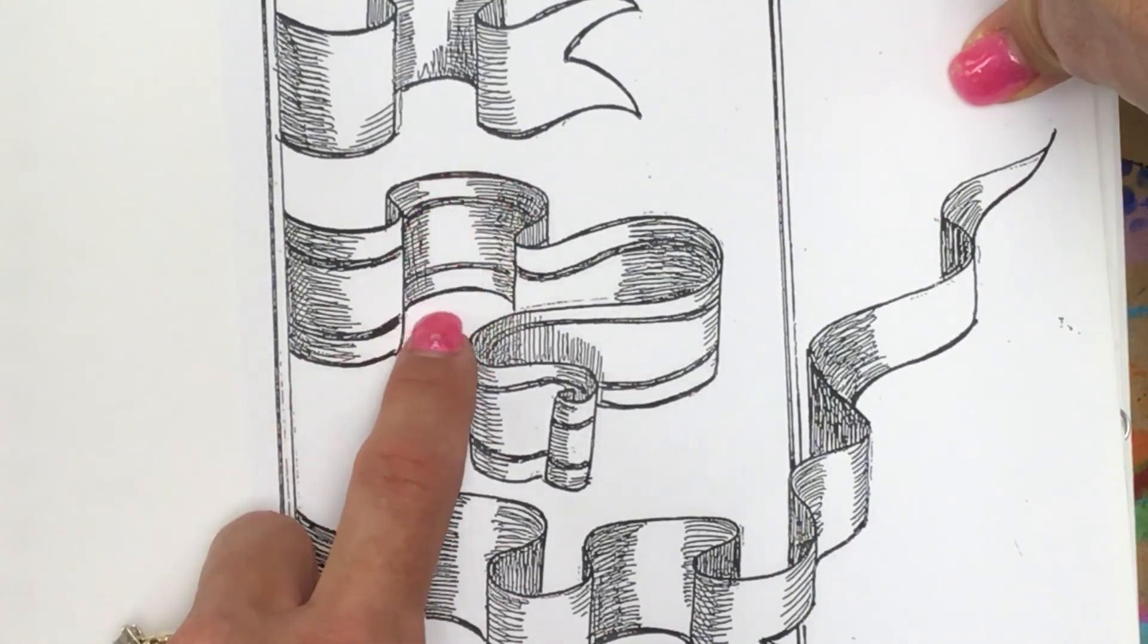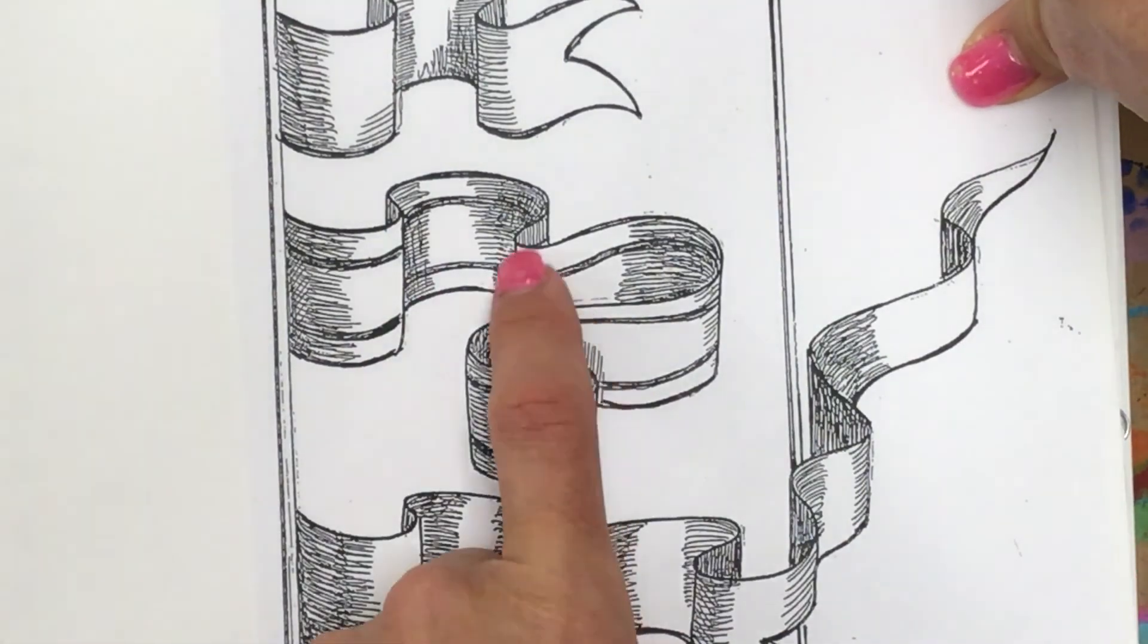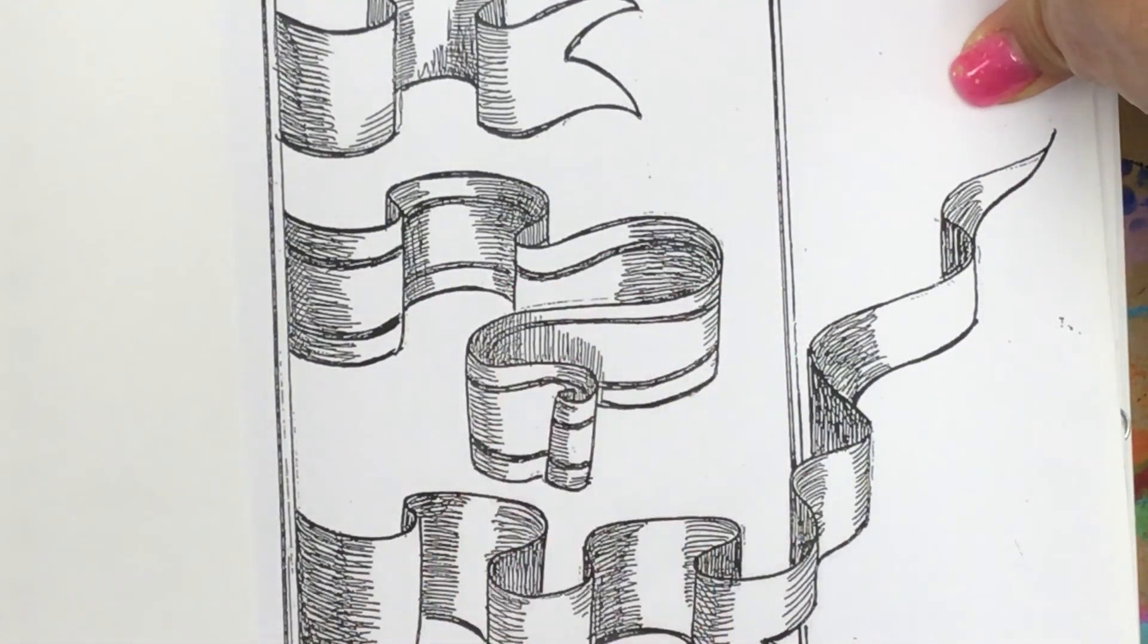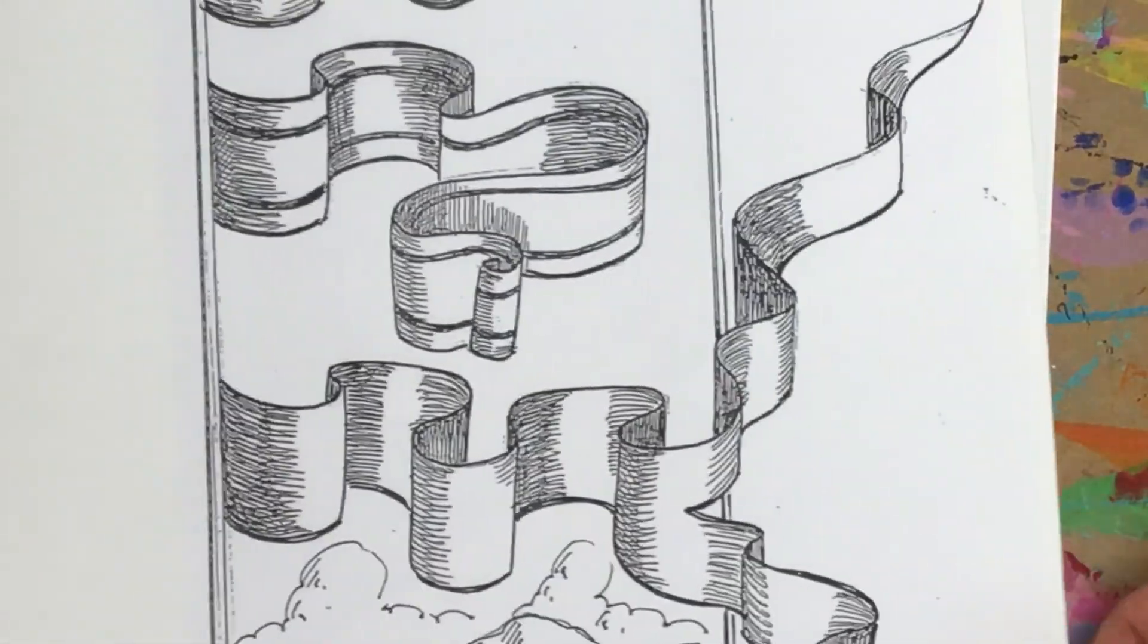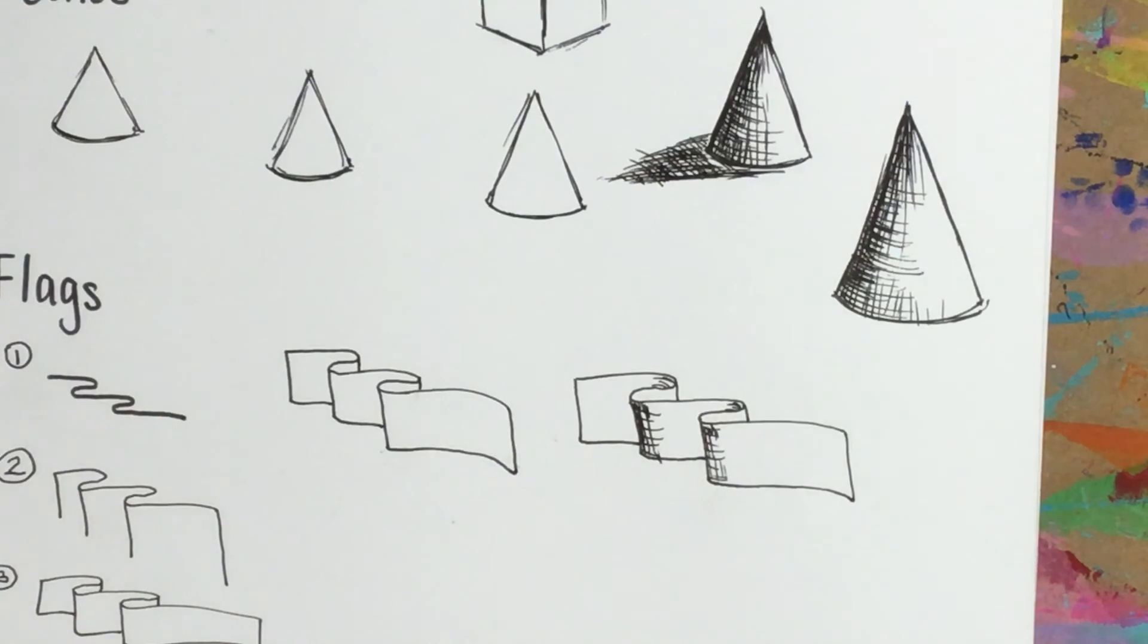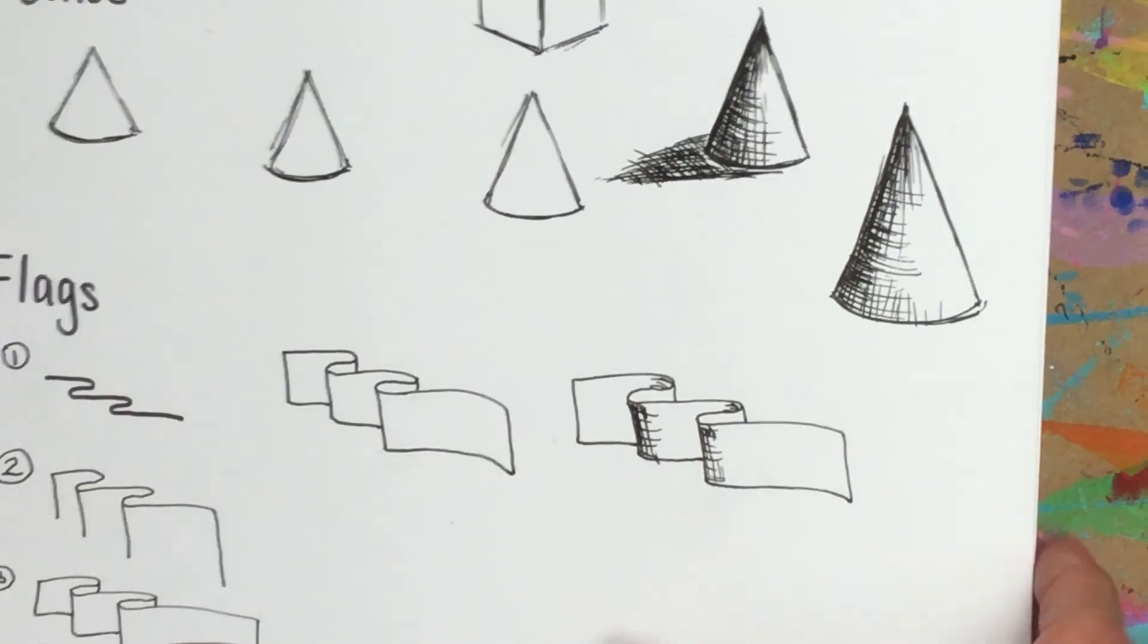So this one curved that way, this one curves that way as well. Then paying attention to all these other curves that help add dimension. You could even make it split off if you want to. So those are some different ways to use geometrical shapes and shading.